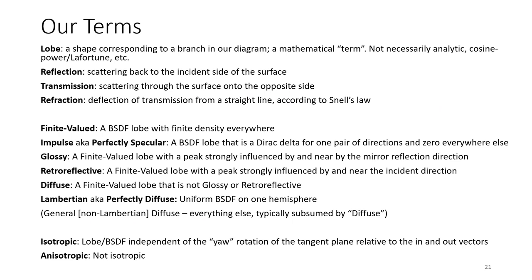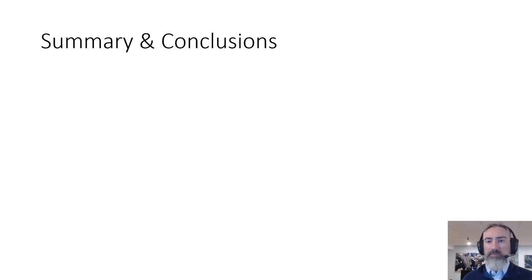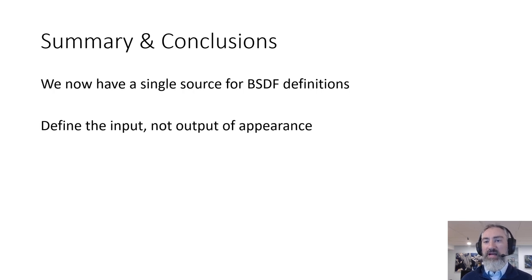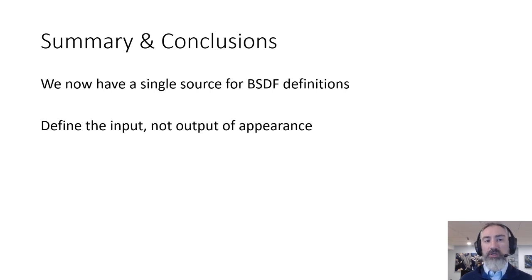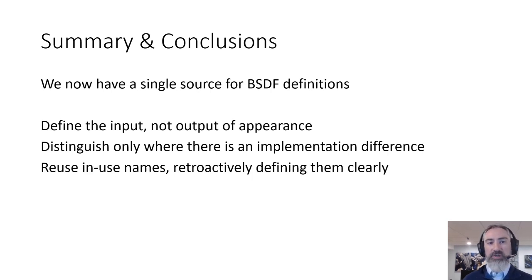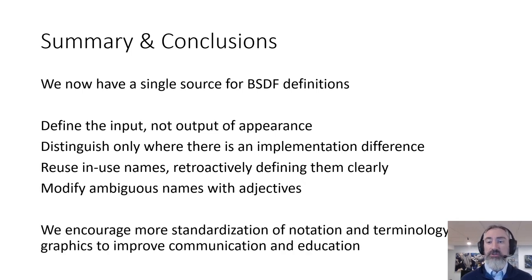Here's a list of all the terms we specifically defined in the paper — you can refer to the paper for those. The paper also contains Rosetta Stone-style tables relating our terms to previous terminology popular across adjacent fields. In summary, we hope everyone will adopt and extend our taxonomy, but at least for ourselves, now we can have consistent terms in our libraries, textbooks, publications, and courses. The methodology we arrived at is one I'll now use for creating terminologies and taxonomies in general: define the input, not the output; distinguish where there's an implementation difference — that's where you put the branches; and reuse terminology that's already in use, but retroactively define it so it's now clear and unambiguous. We encourage further work on standardization to make interdisciplinary communication more effective and make graphics more accessible to newcomers. Thank you very much.